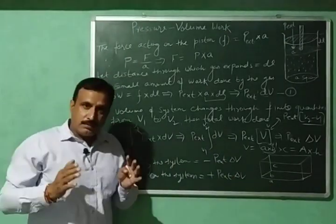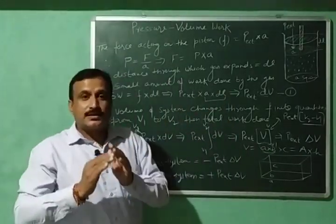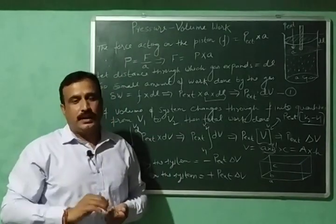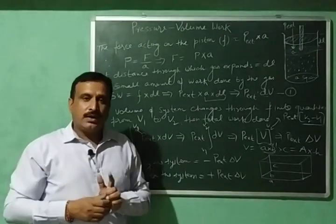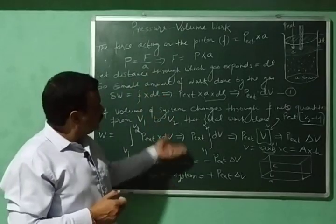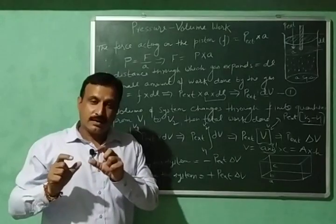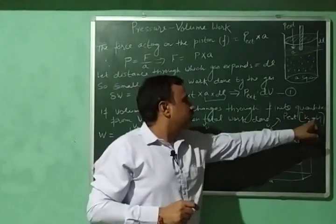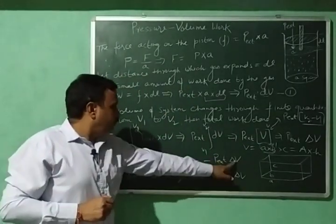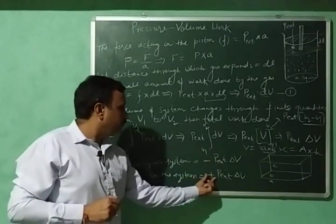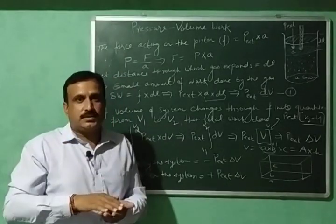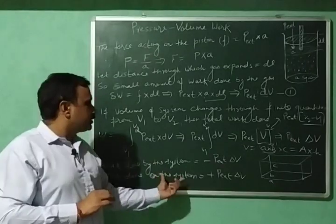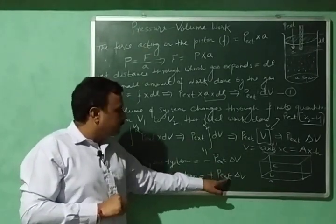For compression, let us suppose that external pressure is slightly more than the internal pressure of the gas. In this case the gas will be compressed and there will be a decrease in volume. The expression is derived in the same manner, but the final volume will be less than the initial volume. So V2 minus V1 is a negative quantity, and negative multiplied by negative becomes positive. The work is being done on the gas, i.e., work is done on the system, and work done on the system is given a positive sign: plus P external into delta V.